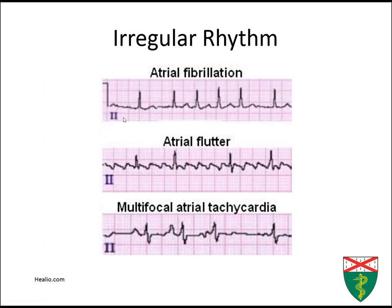Examples of irregular rhythms include atrial fibrillation, where the R-to-R intervals are not equal because the foci of depolarization in the atria come from multiple points rather than the sinus node. Another rhythm to consider is atrial flutter with variable block, where the actual atrial depolarization is constant — coming from the tricuspid annulus — but its conduction to the ventricle is irregular.